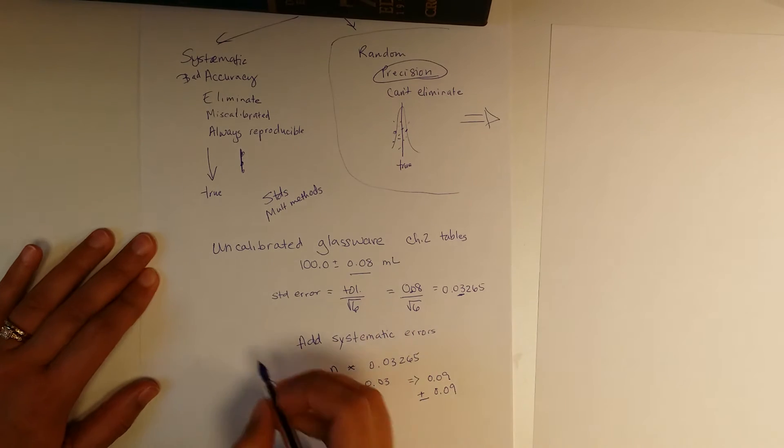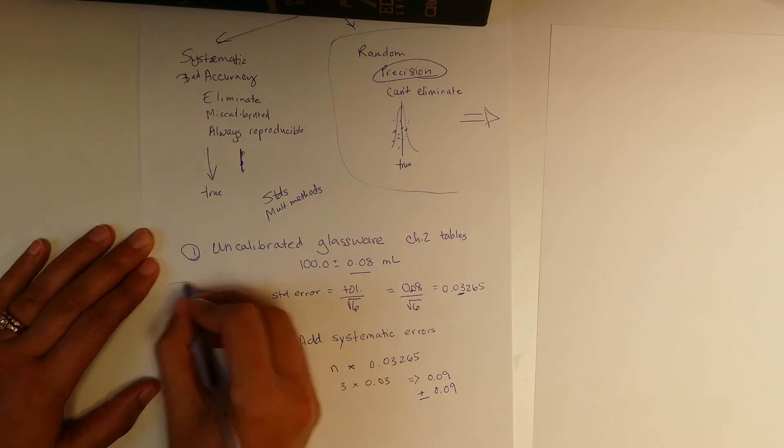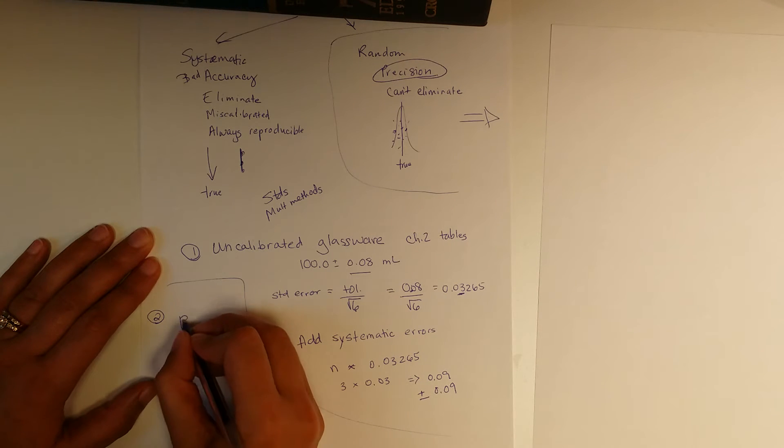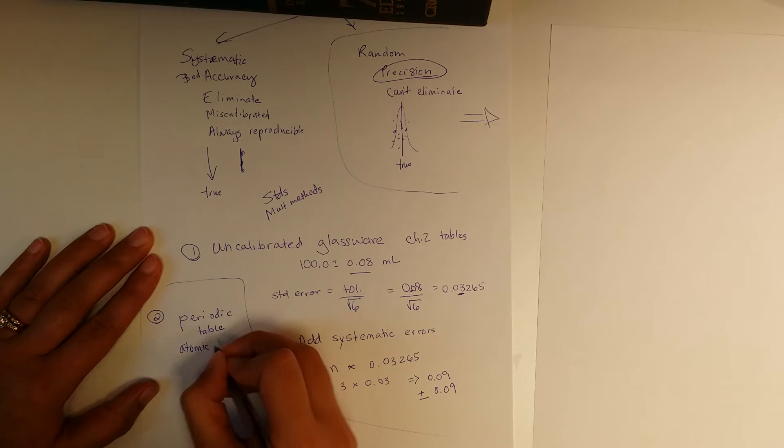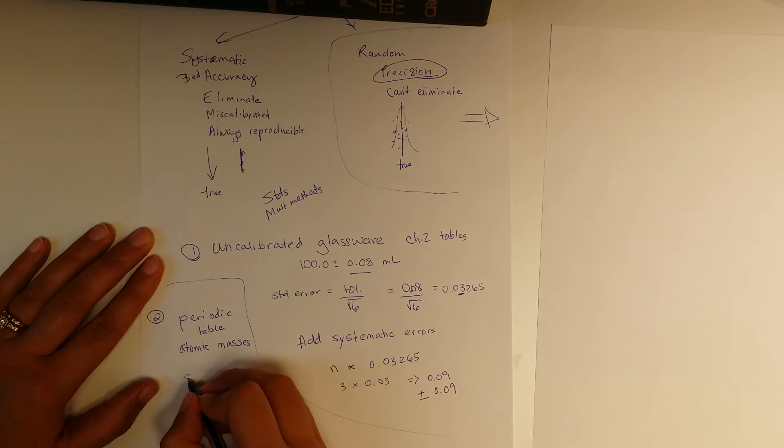The same thing, so that's case one that we know about is uncalibrated glassware. The same thing comes into case two here which is the periodic table where we have the atomic masses. And because of the distribution of isotopes around the planet and the universe it's going to be reproducibly in one geography high or low. Carbon might be high here or low there. And so this is also going to be systematic.